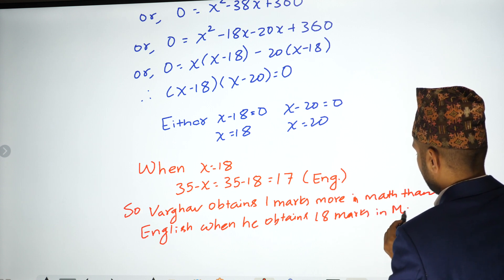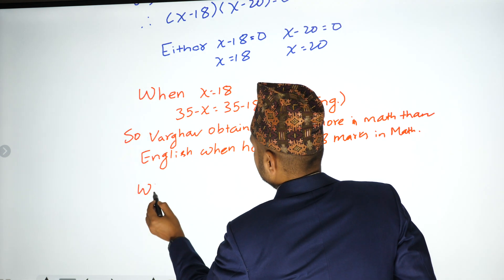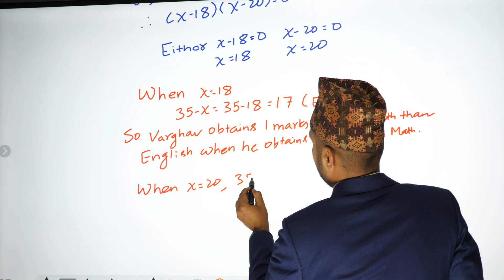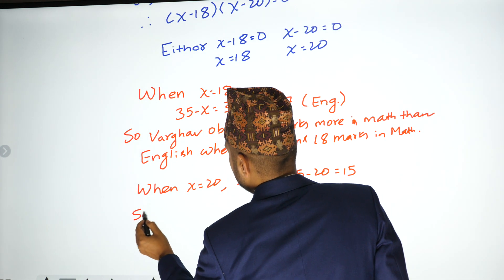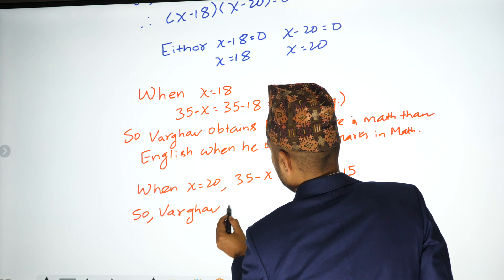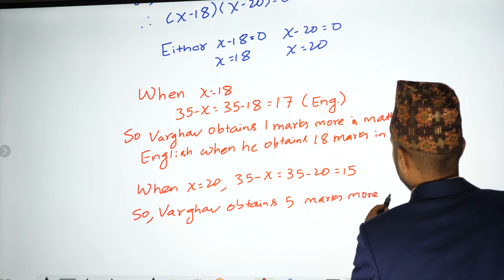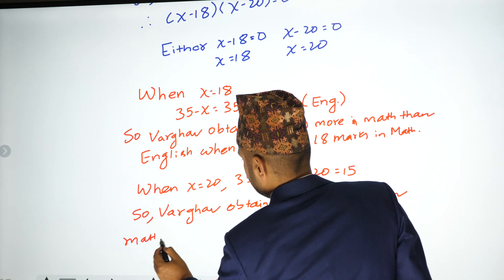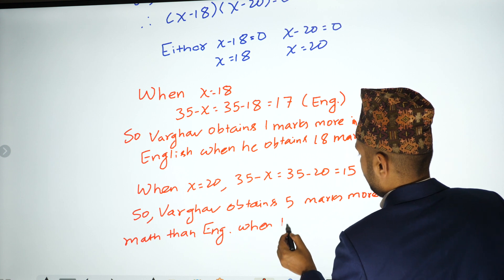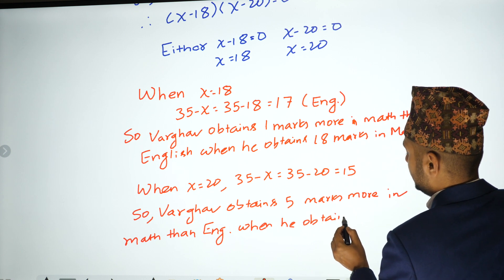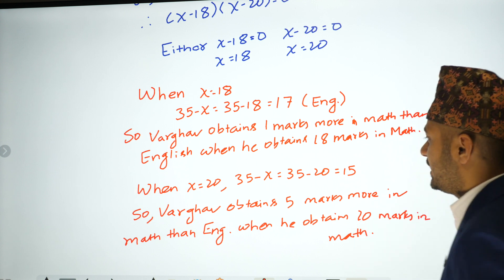When he obtains 20 marks in math, English marks would be 35 minus 20 equals 15. So he obtains 5 marks more in math than English when he obtains 20 marks in math.